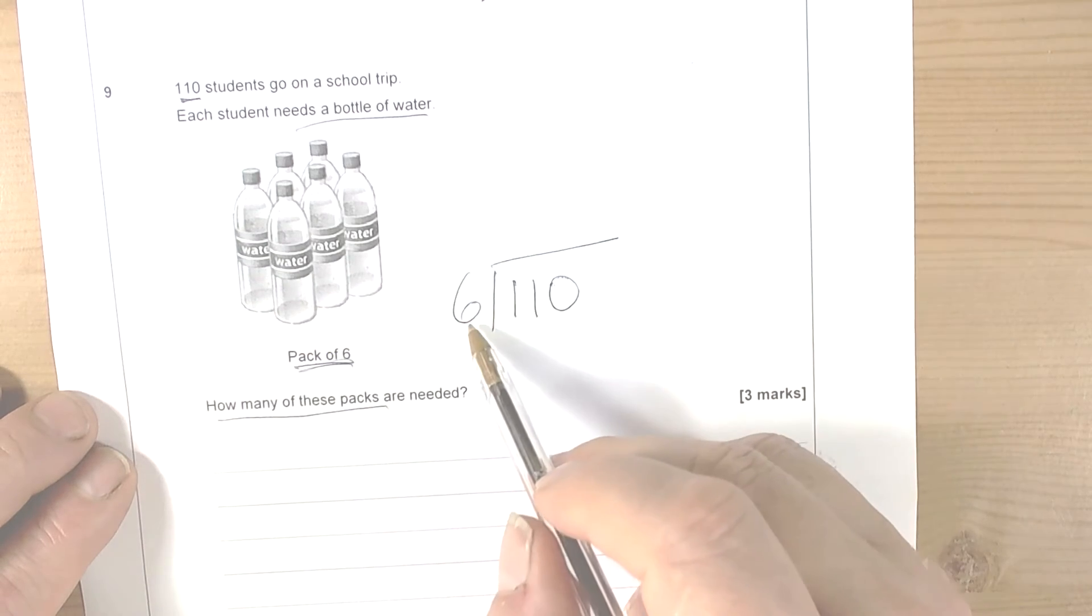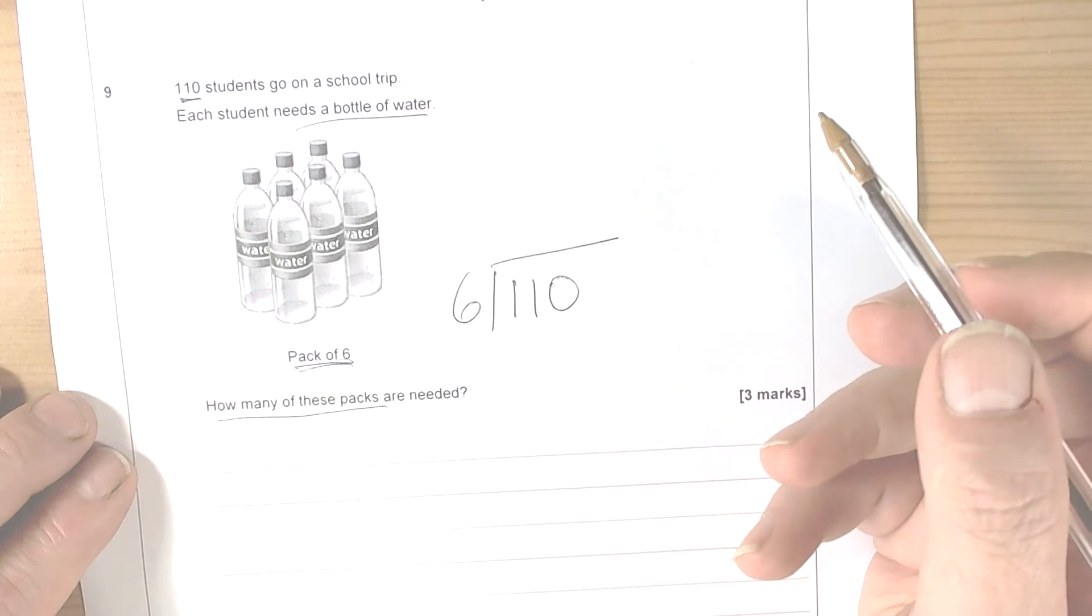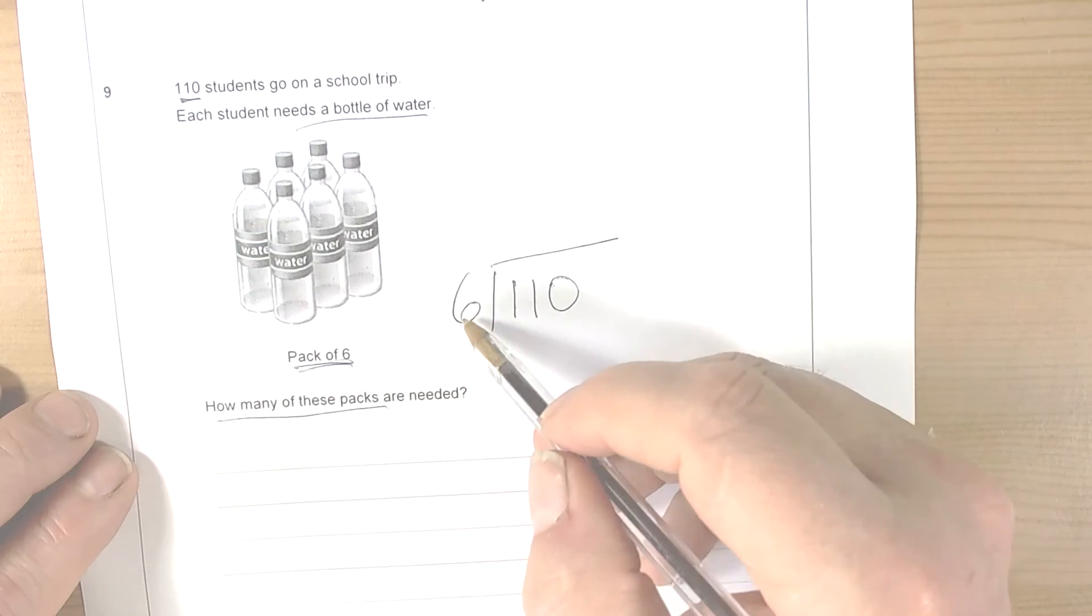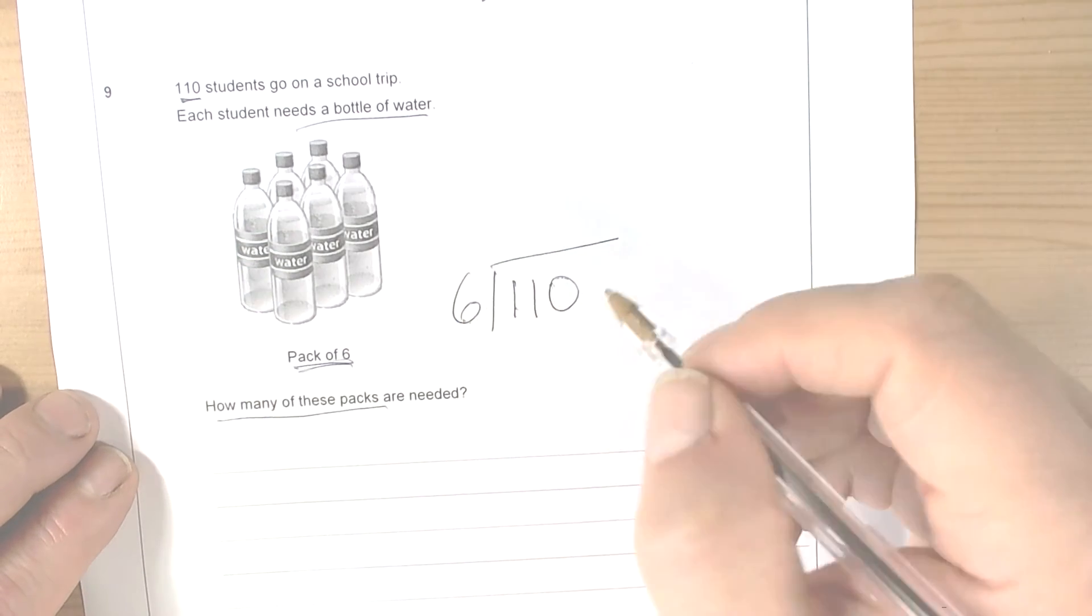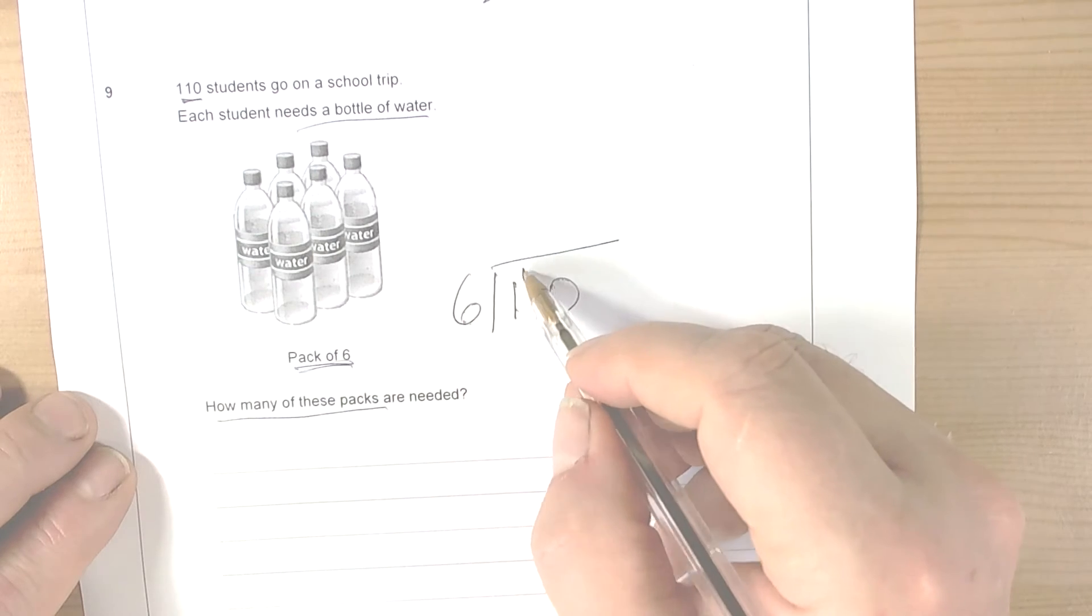So using the multiplication method, there's lots of different ways of doing this. You could keep adding 6 until you get to 110, or you could do the long division or short division method shown here. So how many sixes go into the one? Zero, so we carry that one over to the next digit.